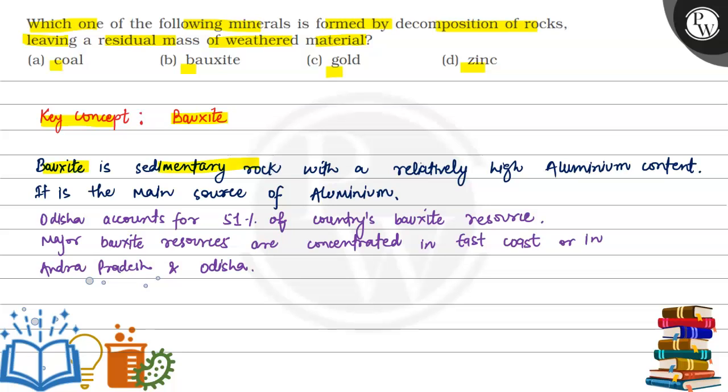Bauxite is a sedimentary rock with relatively high aluminum content. It is the main source for aluminum.